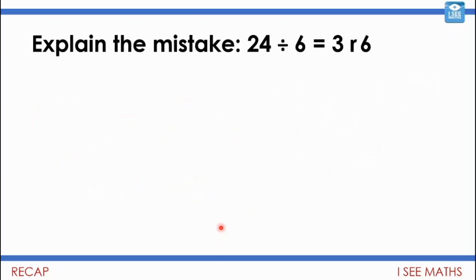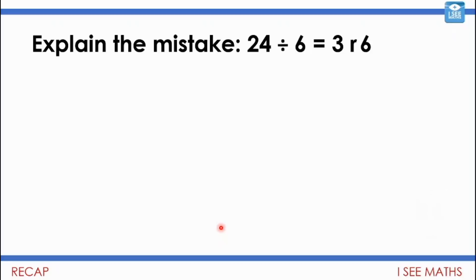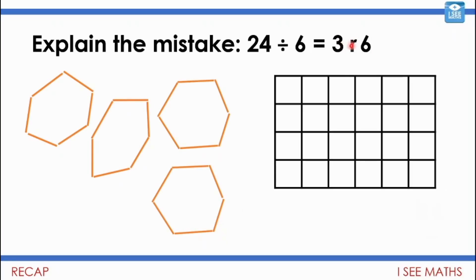I wonder if you can explain the mistake: 24 divided by 6 equals 3 remainder 6. What mistake has been made? Pause the video. If I've got 24 divided by 6, I actually don't have 3 remainder 6, because if I've got a 6 left over, that makes a whole other 6. So 3 remainder 6 effectively becomes 4 — it's the next whole lot of 6, as you can see with these two pictures.